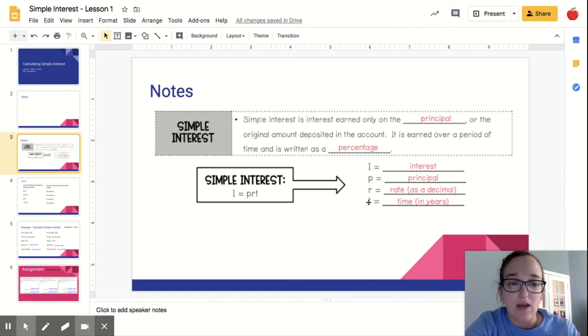And then the rate for the interest is usually a percentage and we have to change it to a decimal. And then time, we always want that to be in years. So this little notes page is going to be super handy. You might want to screenshot it and save it on your desktop or even print it out if you have a printer or just jot down these four little things and the formula.